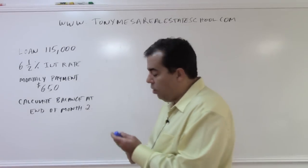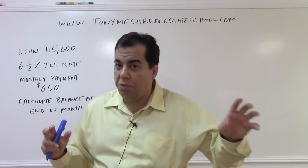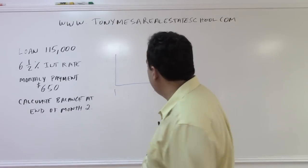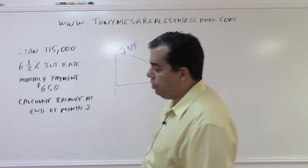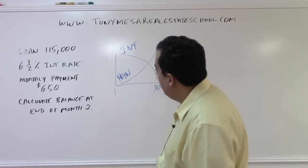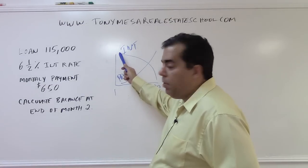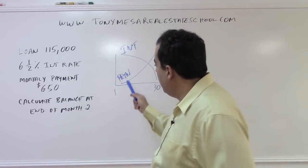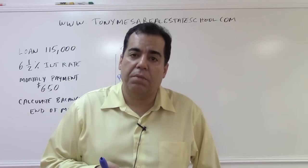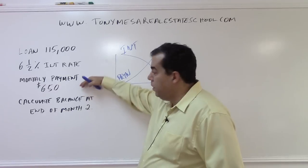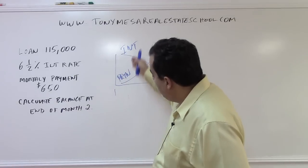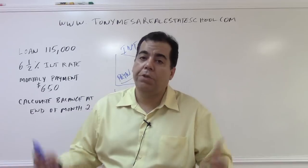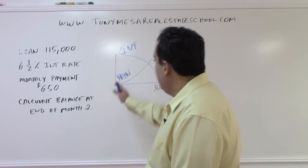On a fully amortized fixed rate loan — meaning at the end you owe zero — let's say it's a 30-year loan. The monthly payment stays the same, but at the beginning you're paying almost all interest and very little principal. Interest is like rent you're paying for the money; paying a million dollars in interest does not reduce your loan by a single penny. Principal is what amortizes or kills the loan. In any given month, the payment consists of only two things: principal and interest.